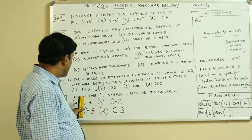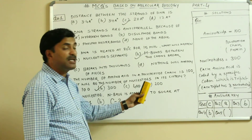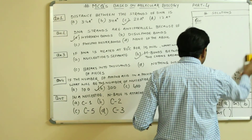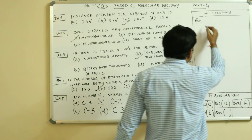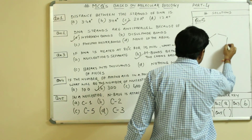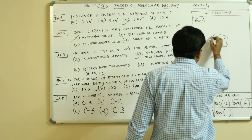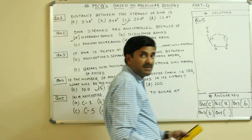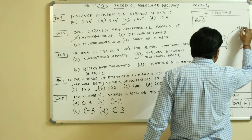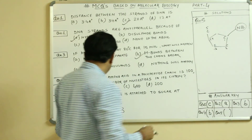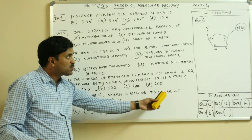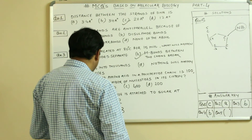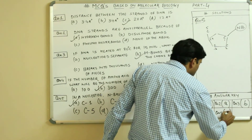In a nucleotide, the nitrogen base is attached to sugar. Always remember that nitrogen bases are attached at the C1 position of sugar — carbon number 1. This is the sugar ring with carbons numbered 1 through 5, and the nitrogen base attaches at C1. So the answer to question number 5 is A — C1, carbon number 1.